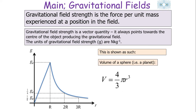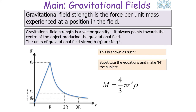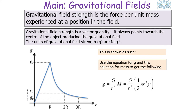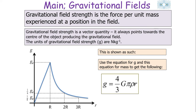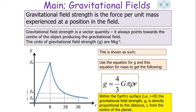Once under the surface, the mass above pulls you upwards while the mass below pulls you downwards, removing the cumulative downward effect present at the surface. We can also show this mathematically: the volume of a sphere is V = (4/3)πR³, and density is ρ = M/V. Substituting and making M the subject, then using the equation for g, it simplifies to show that within the Earth's surface — when R is smaller than the planet's radius r — g is directly proportional to distance from the centre, reaching zero at the core.